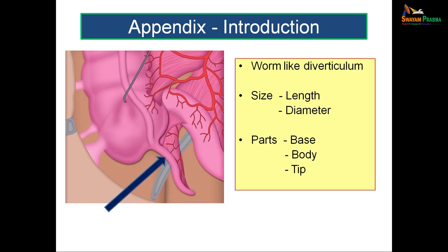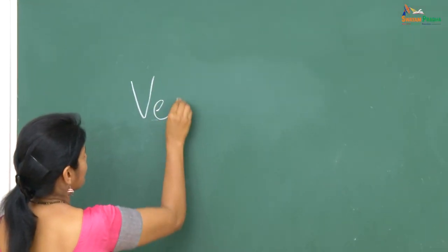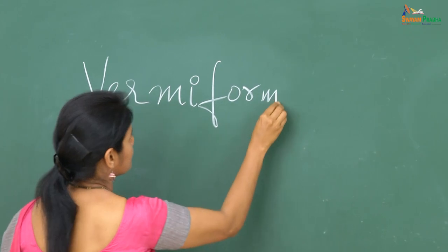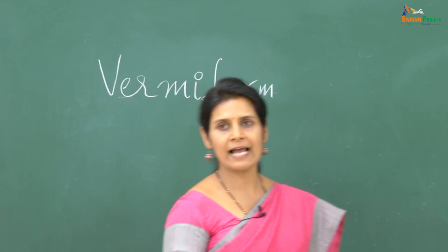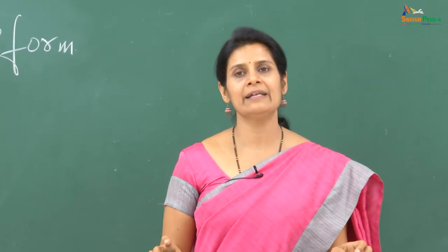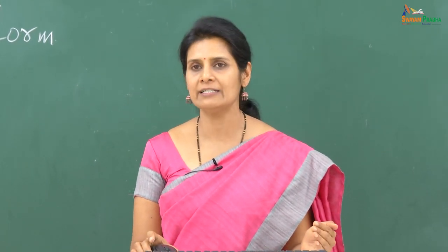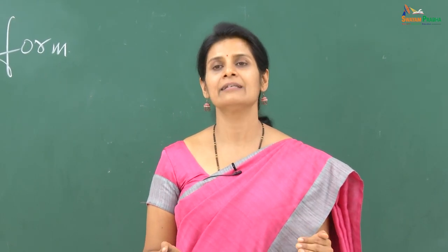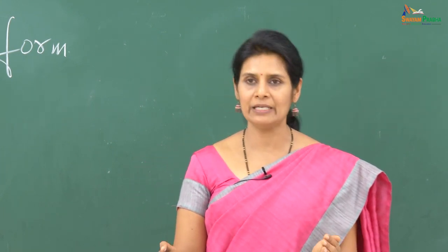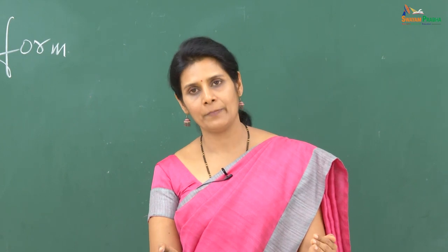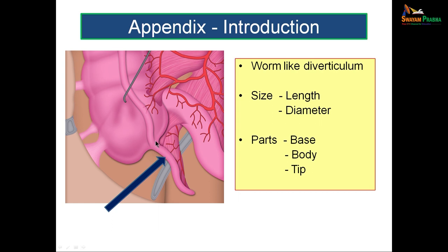The appendix is also called the vermiform appendix because it resembles a roundworm — it is a narrow tubular structure. The length varies greatly from 2 to 20 centimeters, with an average of 9 centimeters, and a diameter of about 5 millimeters. It has three parts: the base, which attaches to the cecum; the body; and the tip.